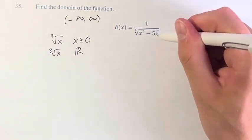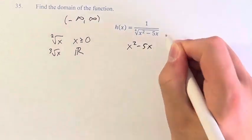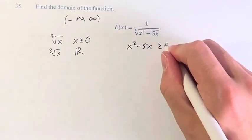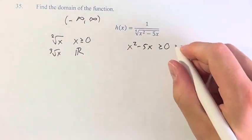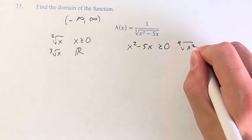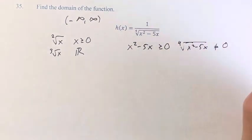So here we have an even root. So therefore, what's inside of this has to be x squared minus 5x has to be greater than or equal to 0. In addition, the entire denominator, the fourth root of x squared minus 5x, has to be not equal to 0.